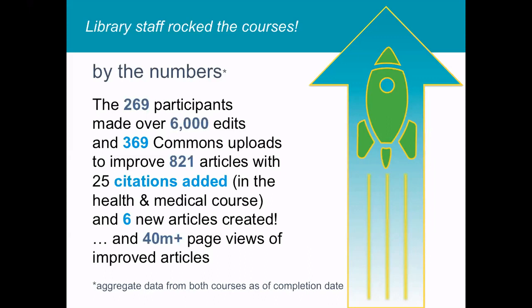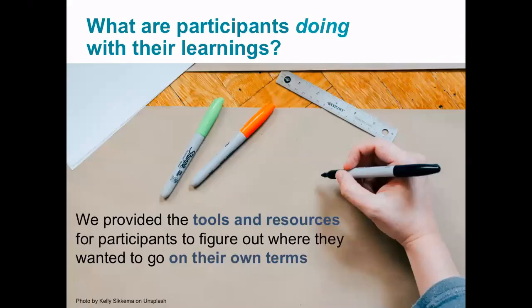These are some of the numbers aggregated from both courses as of their completion date. Beyond the courses, what are the participants doing with their learnings? Our course design sought to provide participants with tools, resources, and information so they could decide what they would do next. We didn't want to presume we knew what public library staff would want to accomplish; rather, we aimed to help them find a way to incorporate Wikipedia in their libraries in ways that was meaningful to them.